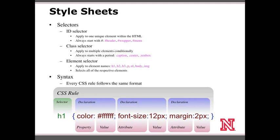Selectors are how you identify HTML elements that you want to modify. Here is the syntax for a CSS rule — it's divided into two areas. We have the selector, in this case h1, which identifies what HTML element the rule will be applied to. Then we have brackets to separate the declarations from the selector. The first declaration is composed of a property and a value — in this case, the property is color and the value is a hexadecimal code for white, dealing with font color.